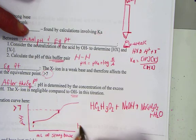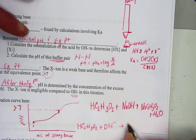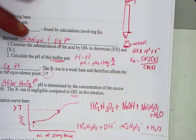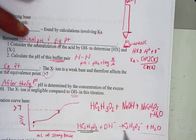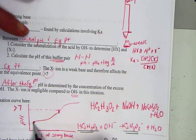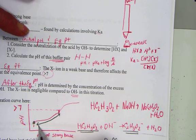A net ionic equation leaves together the weak acid, break apart the strong base, break apart the salt, and leave together the molecular water. Notice that the acid-base conjugate pair creates a buffered solution. In the region between the initial point and the equivalence point, this is a buffered solution.